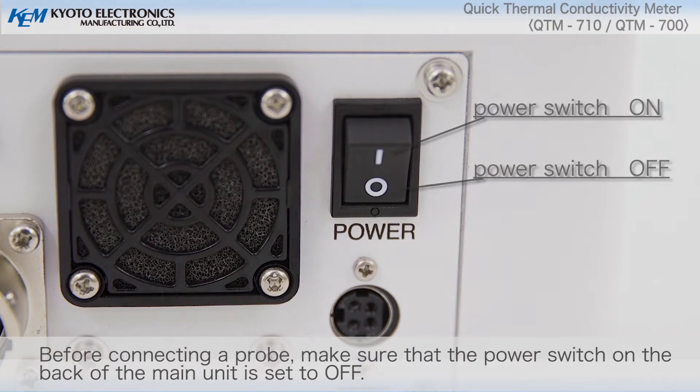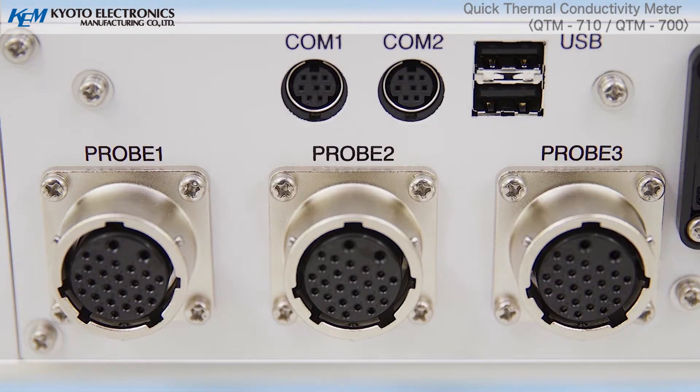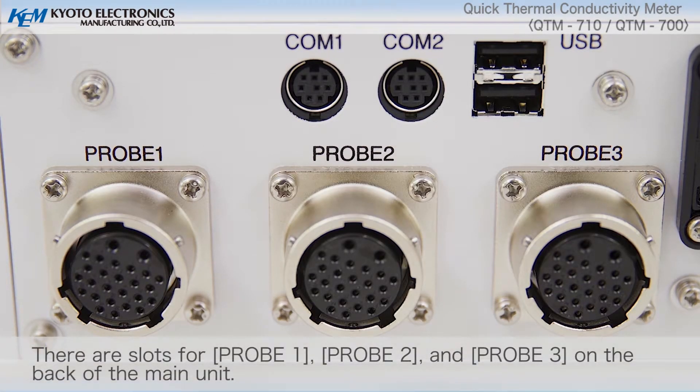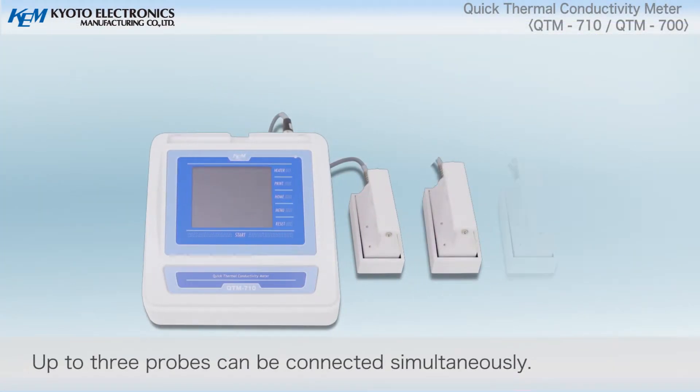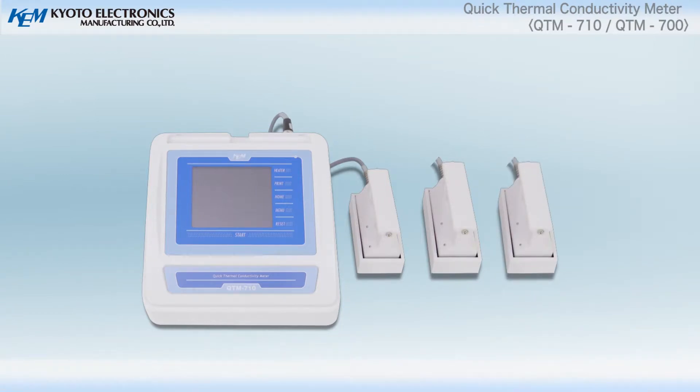Probe connection. Before connecting a probe, make sure that the power switch on the back of the main unit is set to off. There are slots for probe 1, probe 2, and probe 3 on the back of the main unit.